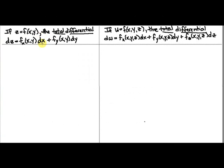Recall that when referring to the parts of the derivative, dx and dy, we call these differentials. We define the total differential to be dz equals the partial derivative of f with respect to x times dx, plus the partial derivative of f with respect to y times dy, for a two-variable function f(x, y).